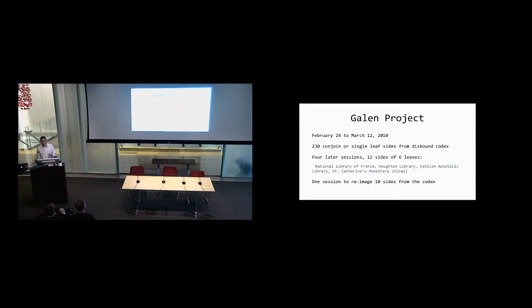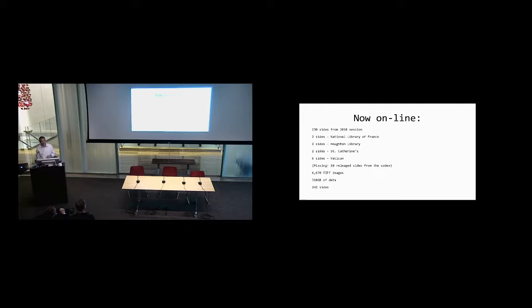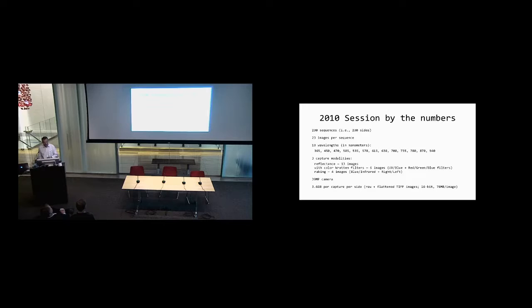In four later sessions, 12 sides of six leaves have been imaged from the National Library, the Houghton Library, the Vatican Apostolic Library, and St. Catherine's Monastery in Sinai. There's also been a session to re-image 10 sides from the bound codex, which we're hoping to have online soon. So what's online now? There are 230 sides from the 2010 session, plus the 12 sides from other repositories. The 10 re-imaged sides from the codex are missing. There are 6,670 TIFF images, 318 gigabytes of data, and 242 total sides.